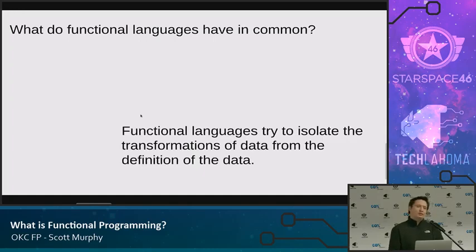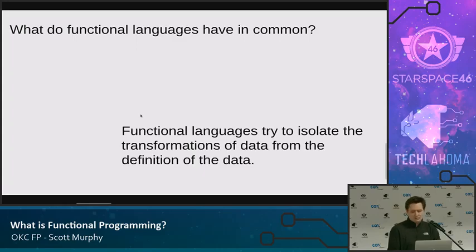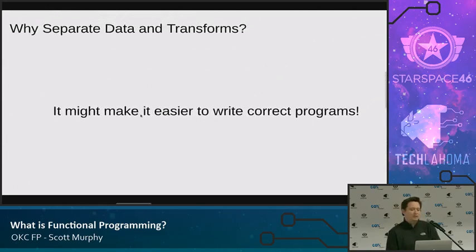Does anybody have a thought of why you might want to split your data from the objects transforming the data? He said you don't know what data you have — and that's a really good point. What that might mean is you do know what data you have right now, but you don't know what data you're going to have. With a function, if you're dealing with just a transformation, you can extend that transformation in the face of a lot of different data without having to modify all the different definitions of that data.